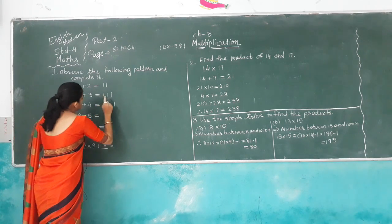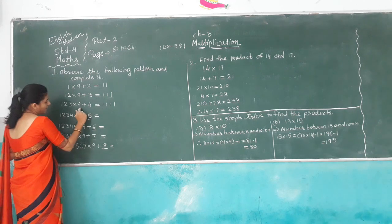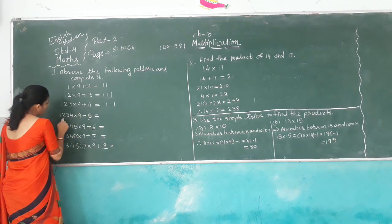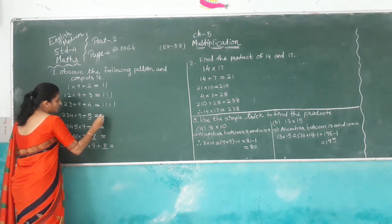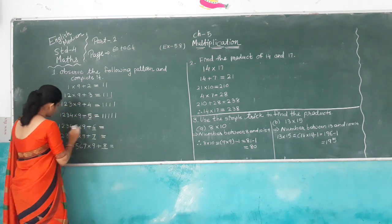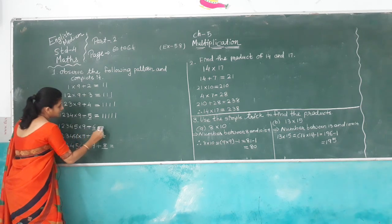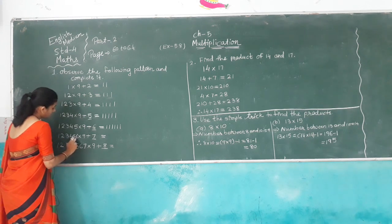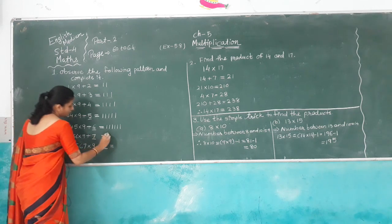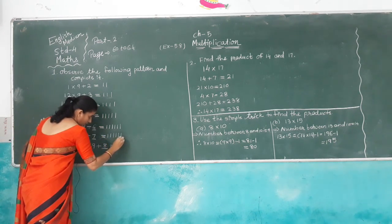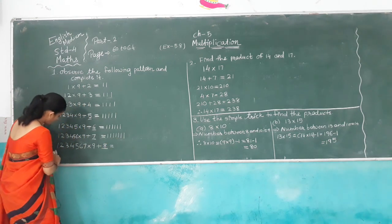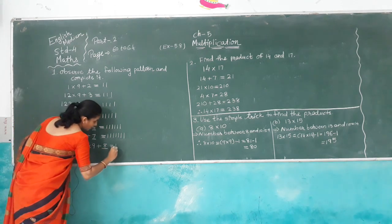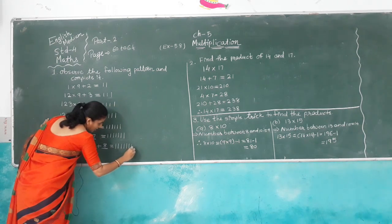3 times 1 means 111. Then 123 multiplied by 9 plus 4, we get 4 ones — 1,111. Same pattern: 1,234 multiplied by 9 plus 5 gives 5 ones — 11,111. Then 12,345 multiplied by 9 plus 6 gives 6 ones — 111,111. 123,456 multiplied by 9 plus 7 is equal to 7 times 1 — 1,111,111. 1,234,567 multiplied by 9 plus 8 gives 8 times 1 — 11,111,111. So here we can observe the complete pattern.